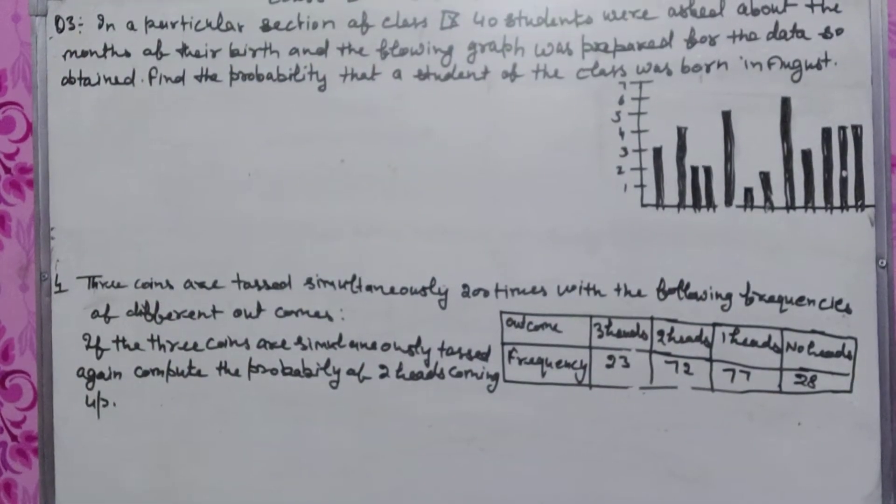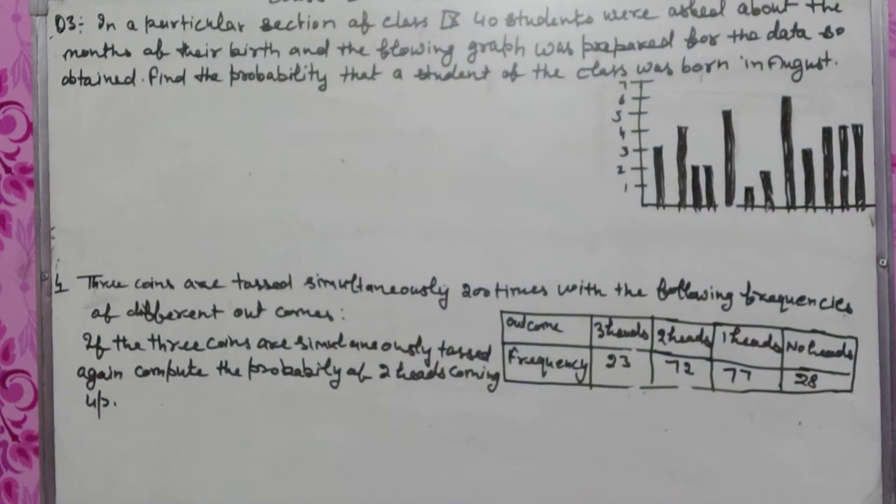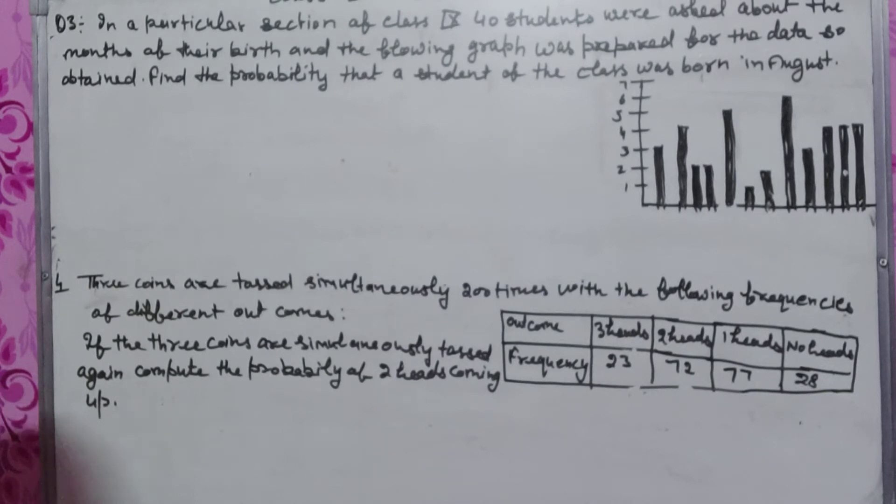May class 9th May 15.1 ka 3rd question kar rahi. In a particular section of class 9th, 40 students were asked about the month of their birth and the flow graph was prepared for the data so obtained.